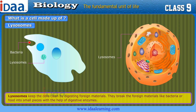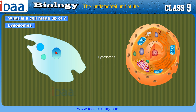Lysosomes keep the cells clean by digesting foreign materials. They break down foreign materials like bacteria or food into small pieces with the help of digestive enzymes. When cells get damaged, lysosomes burst and the enzymes are released into the cell. Therefore, lysosomes are also called the suicide bags of the cell.